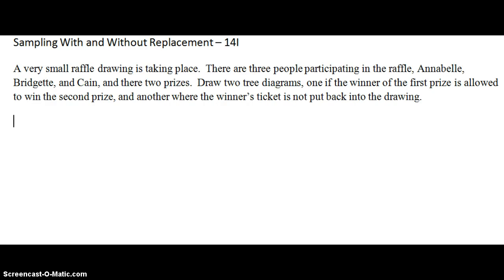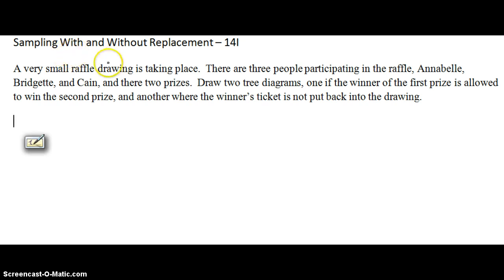Hello, welcome back. We are looking at sampling with and without replacement having to do with probability. So in this situation we have a small raffle — three people in the raffle and there are two prizes. We're going to draw two tree diagrams: one if the winner of the first prize is allowed to win the second prize, and another where the winner is not allowed to win the second prize. This is talking about, of course, with replacement and without replacement.